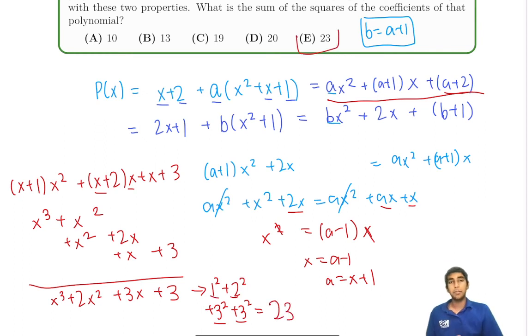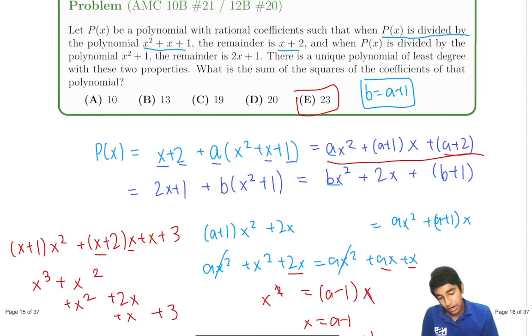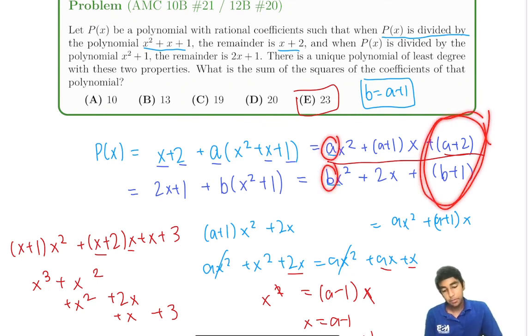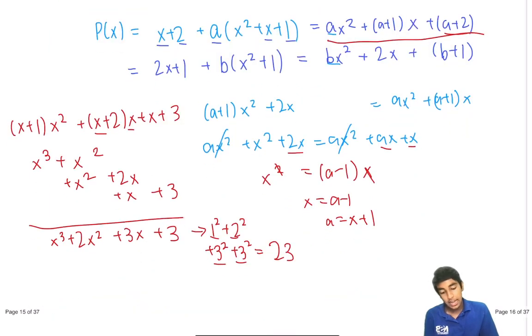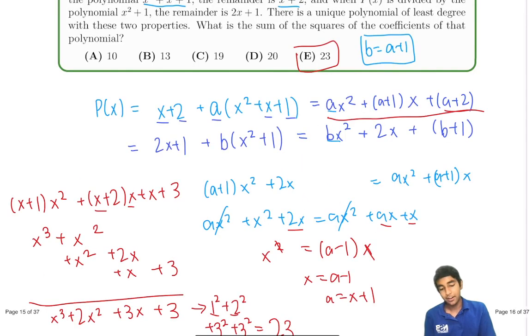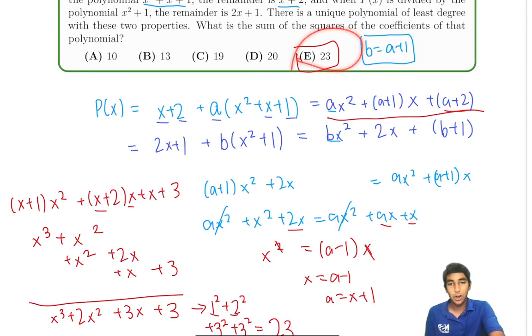The key idea here was noticing that a and b were not constants. And when you divide by x squared plus x plus 1 and x squared plus 1, we have this remaining part. So we just let these two quantities be equal. And then we saw that the constants have to be equal. Not necessarily these terms, but the constants did. And then we plugged it in and we got that indeed a was not a constant. It was x plus 1. And then we simply plug it in and expand and find your answer 23. A great polynomial problem.